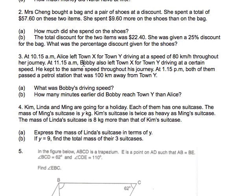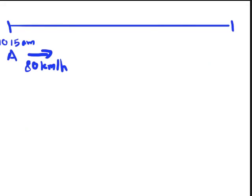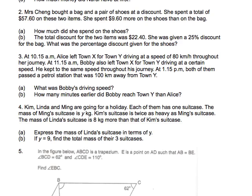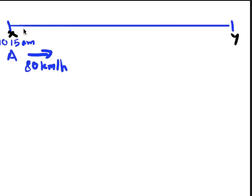At 11:15 AM, Bobby also left town X for town Y, driving at a certain speed. So I don't know what the speed is. But he kept to the same speed throughout his journey. So I'm going to just do that again. I'm going to use a black color this time. This is X, this is Y. And this time, what time did he leave? He left the place at 11:15 AM and this is Bobby. We don't know what the speed is. We don't know. And we put a question mark there.